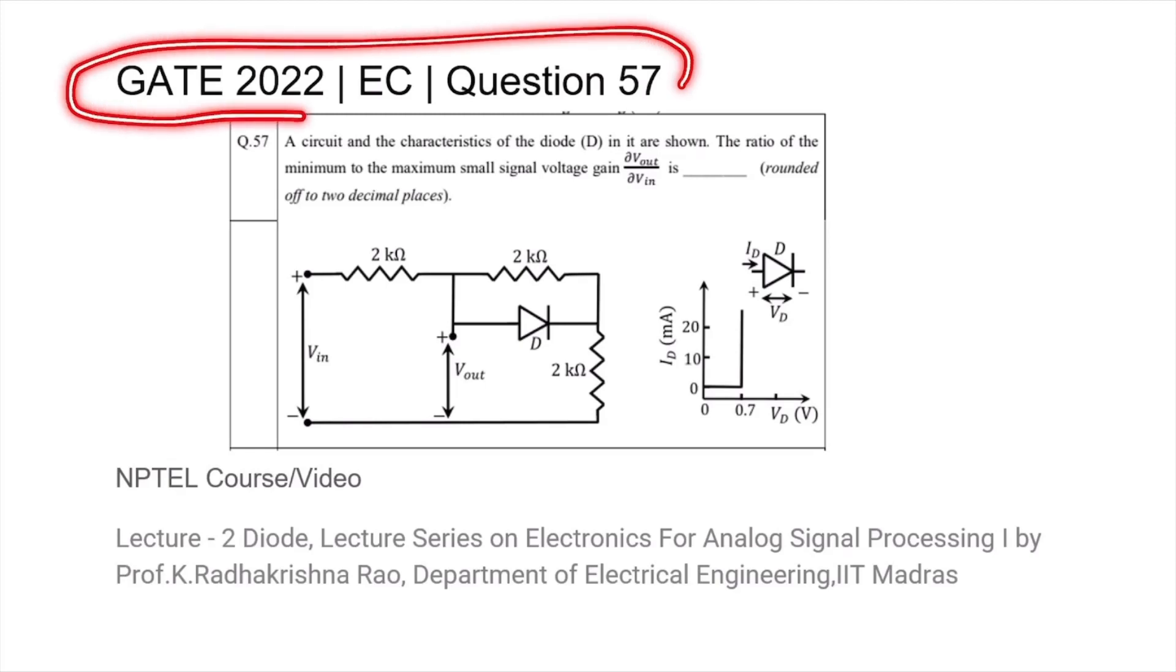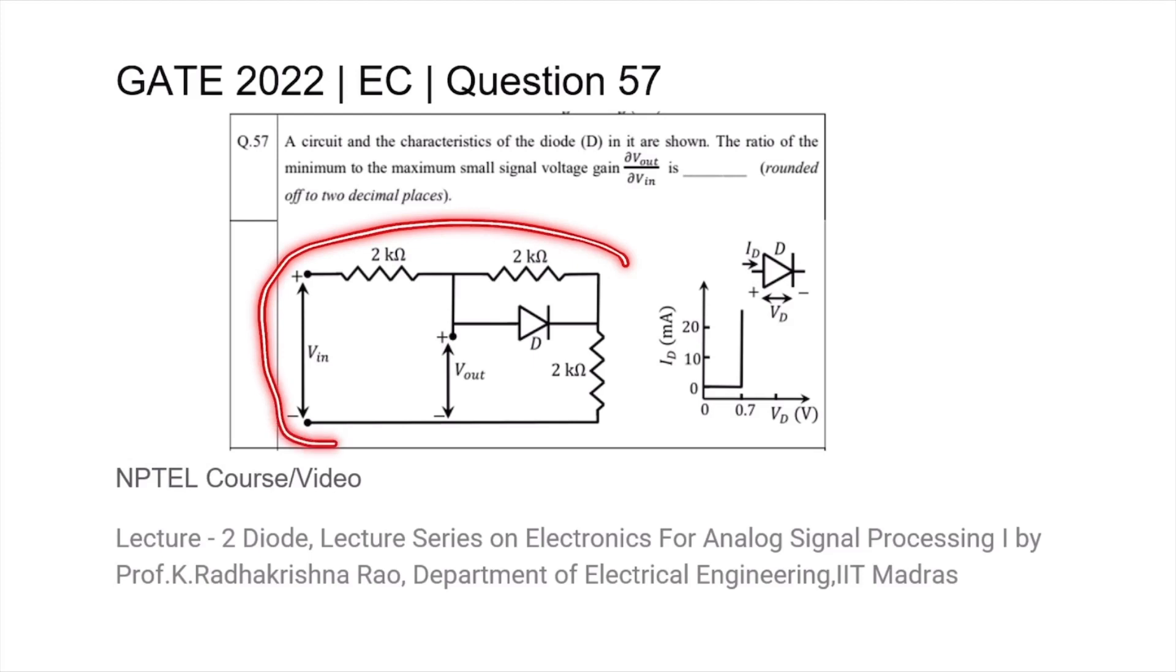This is question 57 from the GATE 2022 EC paper where we are given the following diode circuit and are asked to find out what the ratio of the minimum to maximum small signal voltage gain is.